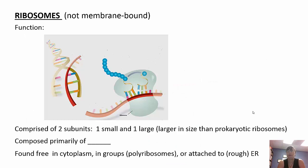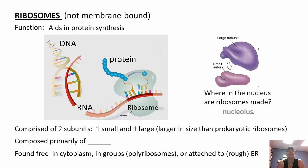Ribosomes function in protein synthesis. DNA transcribes messenger RNA, which is then translated into a protein. Ribosomes have two subunits — a small and a large — and are composed of RNA. They are made in the nucleus and can be found free in the cytoplasm in groups called polyribosomes, or attached to the rough ER.